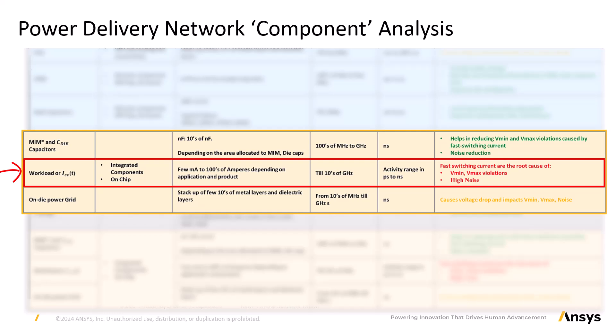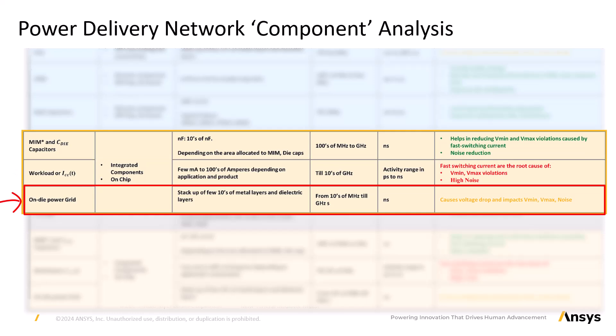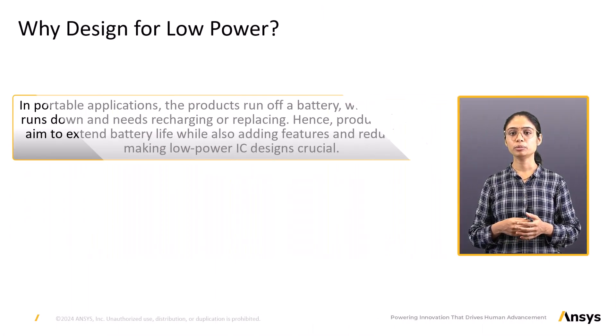Workload or ICCT is the current drawn by active devices on the chip. The drawn current ranges from a few milliamps to hundreds of amperes depending on the application and product. The current is usually fast-switching and causes Vmin and Vmax violations and noise on the voltage rail. Its frequency of impact is from zero hertz to tens of gigahertz. The power routing on the die is called the power grid. It consists of a stack-up of tens of metal layers sandwiching dielectric layers. It degrades the Vmin and Vmax and adds to the noise of the power rail. Its parasitic elements impact the voltage rail in ranges of tens of megahertz to gigahertz.